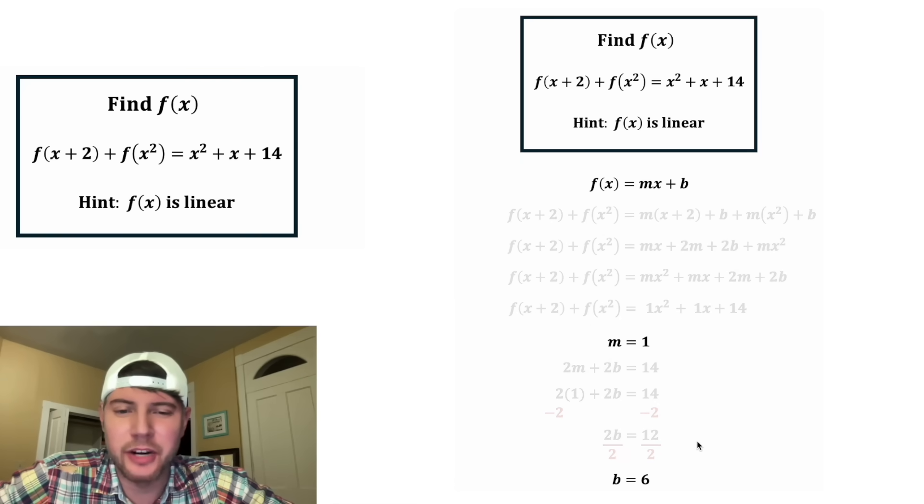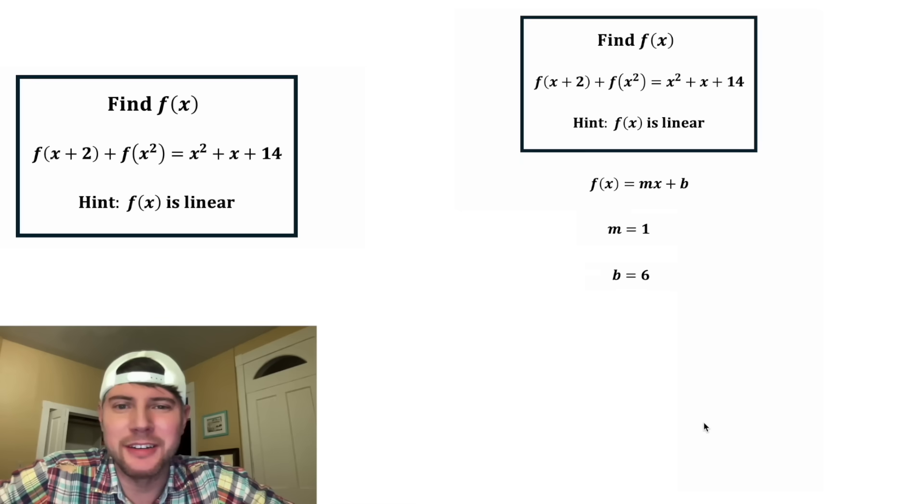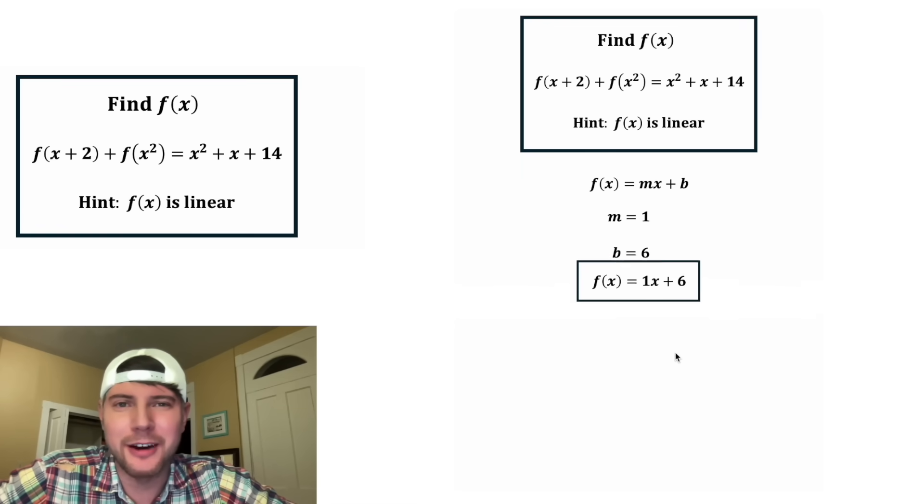And now we know the values for m and b. Let's plug them in. f of x is equal to 1x plus 6. This is the answer to our question, let's put a box around it. How exciting.